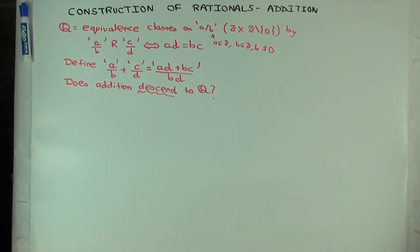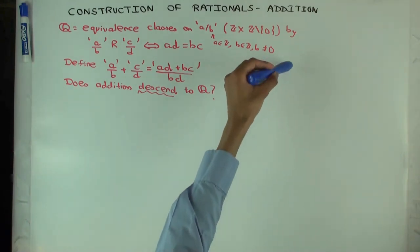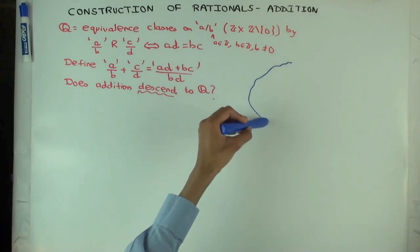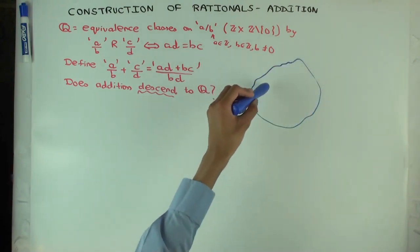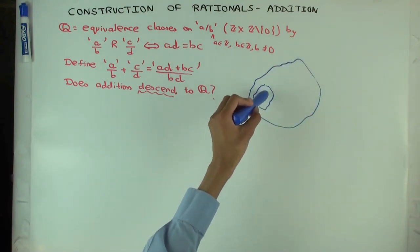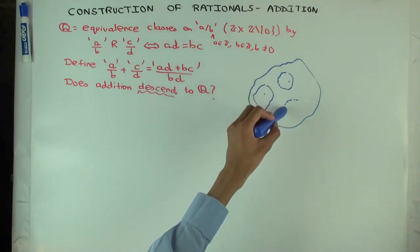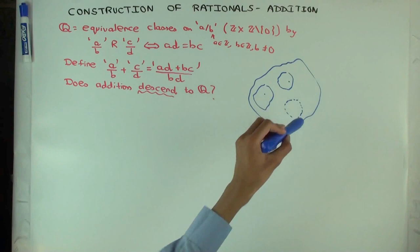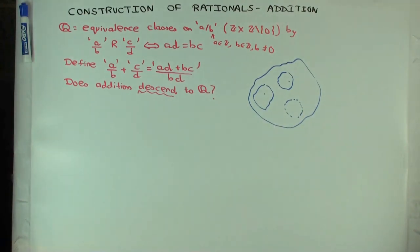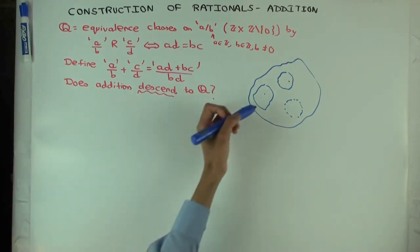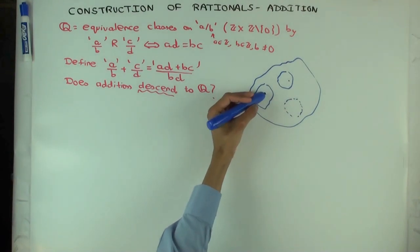Now what do I need to show in order to show that I can actually add rational numbers? Do you mean we want to show closure and addition? We want to show something slightly more subtle. We want to show that this operation is well defined. It descends to rational numbers. Let me have the picture here.